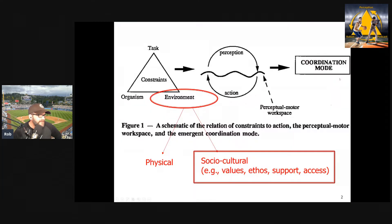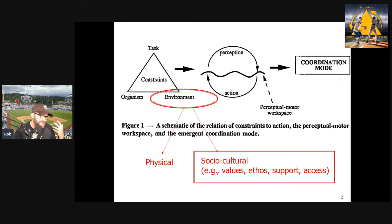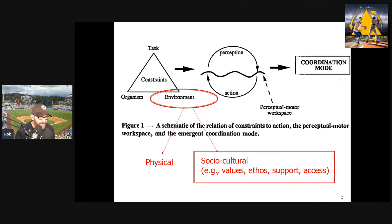In the constraints approach and Newell's constraints model, we have three constraints that shape the emergence of movement and coordination: the task constraints, the individual organism constraints, and the environmental constraints. Today we want to focus on environmental constraints, and those can be further split into two types: physical environmental constraints, which we talk about a lot — things like wind, playing surface, and things like that.